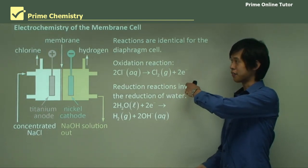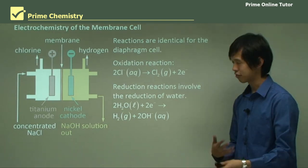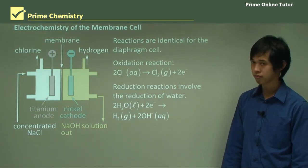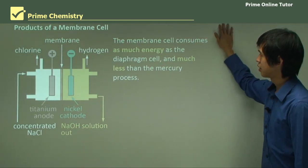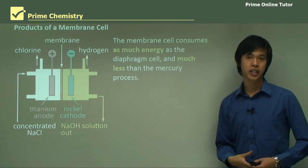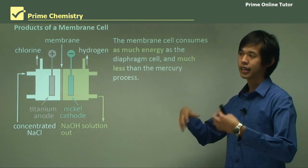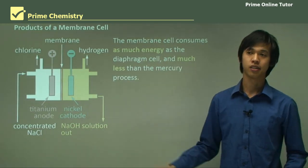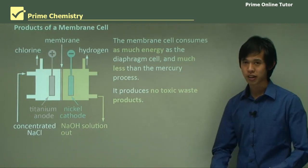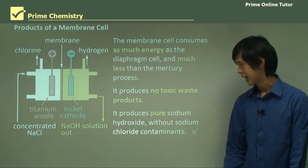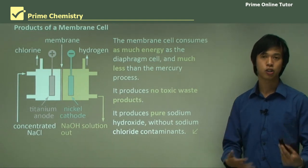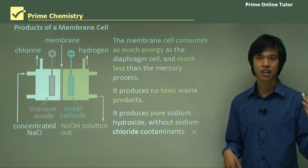These two reactions are all you need to remember for the diaphragm and membrane cells; the mercury cell requires a couple more. The membrane cell consumes the same amount of energy as the diaphragm cell, and much less than the mercury process — because mercury directly reduces sodium ions, requiring more energy than these water-reducing cells. Additionally, it produces no toxic waste — no mercury, no asbestos — and produces pure sodium hydroxide without sodium chloride contaminants, because chloride ions can't fit through the pores of the PTFE.